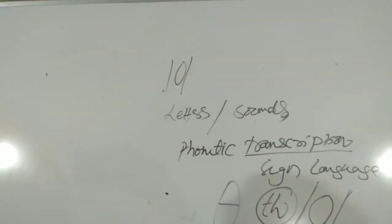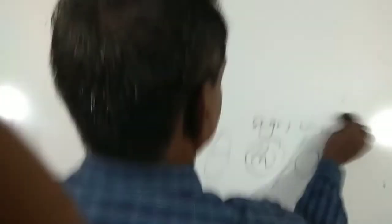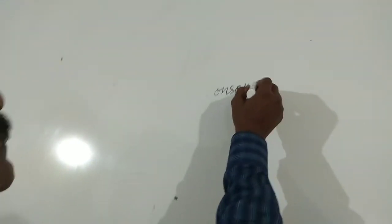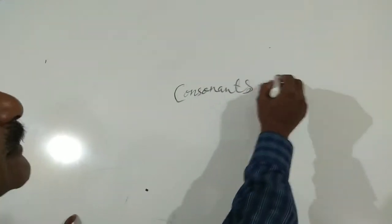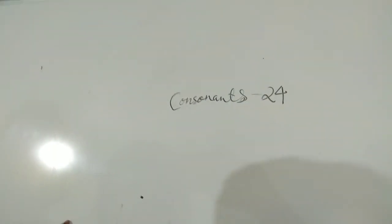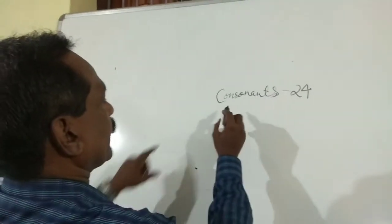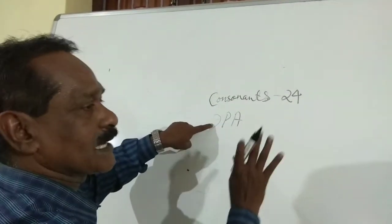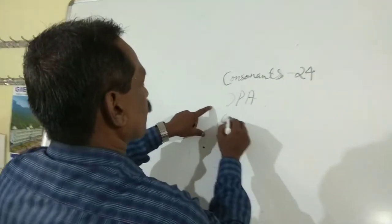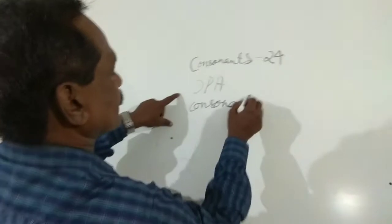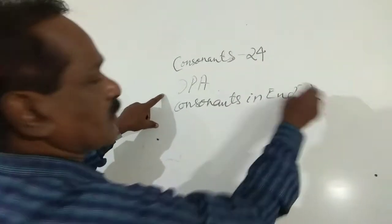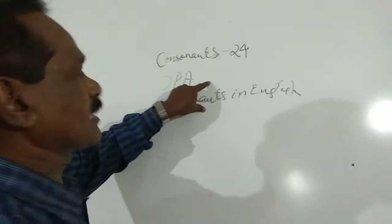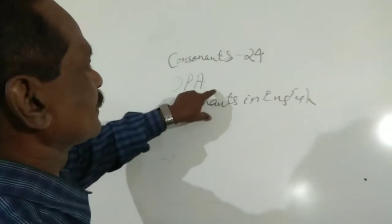Now, in the case of consonants — I have already said that there are 24 consonants — you can find that most of the sound symbols, or the IPA, International Phonetic Alphabet, they are similar to the normal consonants in English.